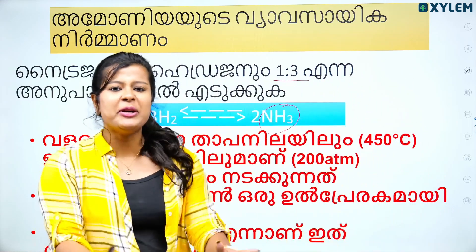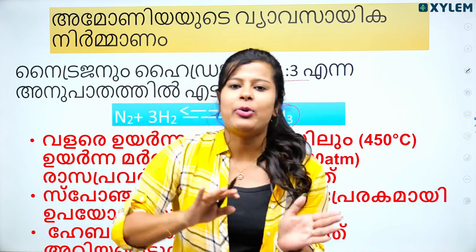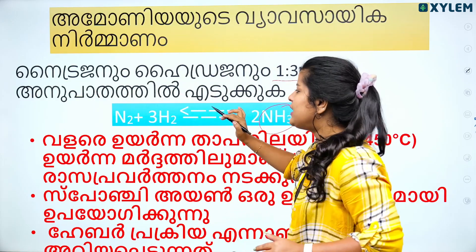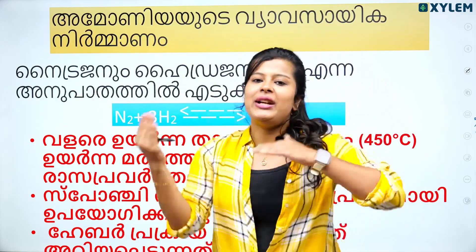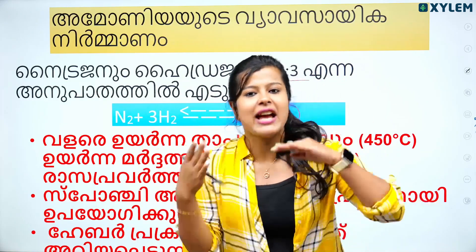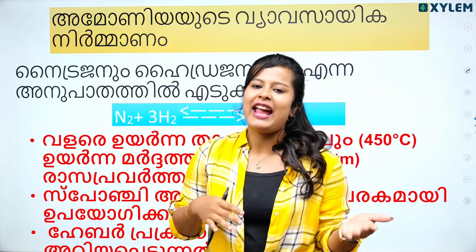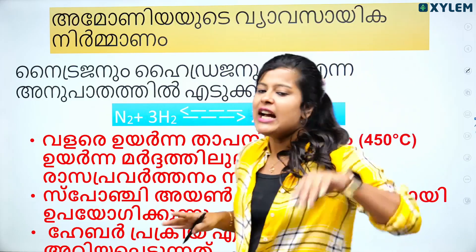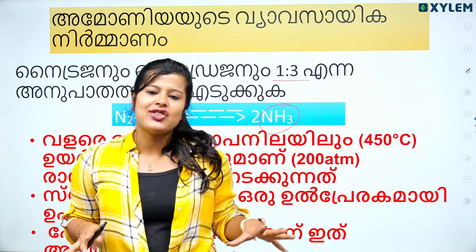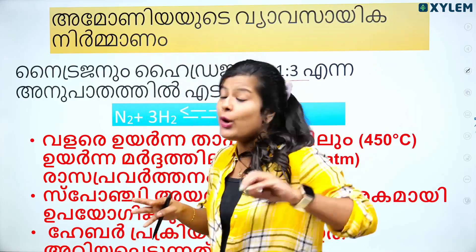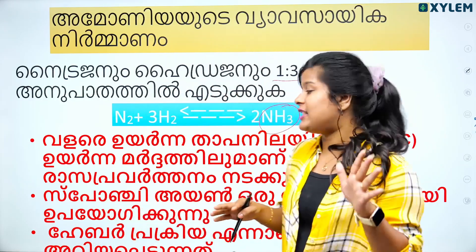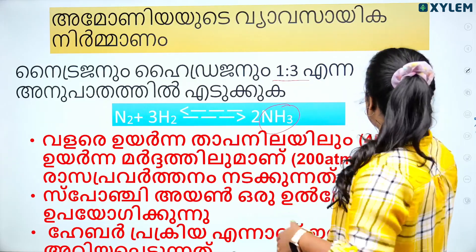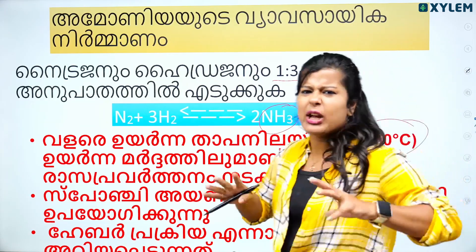Let's look at this reaction. We have two arrows — forward reaction and backward reaction. So we prepare NH3, and we can also go back to nitrogen and hydrogen. If we have 450 degrees Celsius, it's a significant temperature.